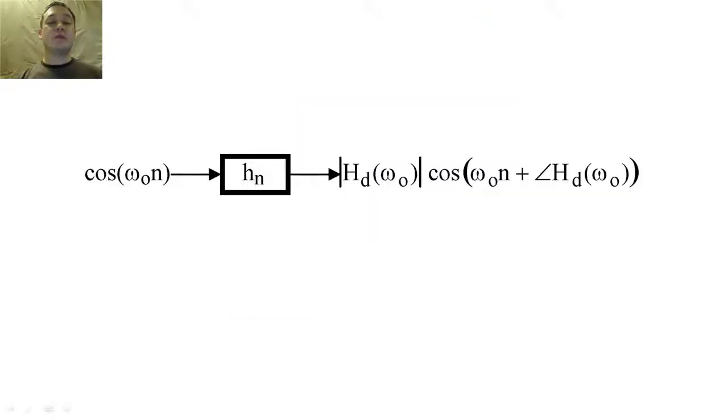Since we are more familiar with cosine, and a cosine is simply the summation of a pair of complex conjugate e to the j omega nought n's, we can easily show that a filtered cosine will have the same frequency as the original cosine.